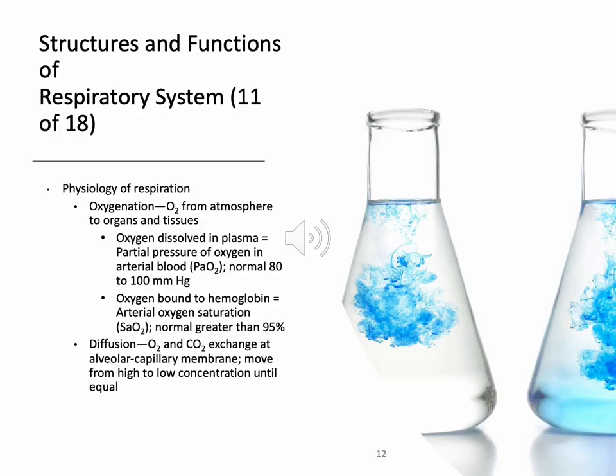Partial pressure is very important to know. Partial pressure is the oxygen dissolved in the plasma — it's arterial blood. Just know 80 to 100 is what that looks like — it's PaO2 versus SaO2. Remember the difference. Write it down. Commit it to memory. Oxygen bound to hemoglobin is the arterial oxygen saturation, or SaO2, and that's going to be normal at greater than 95.